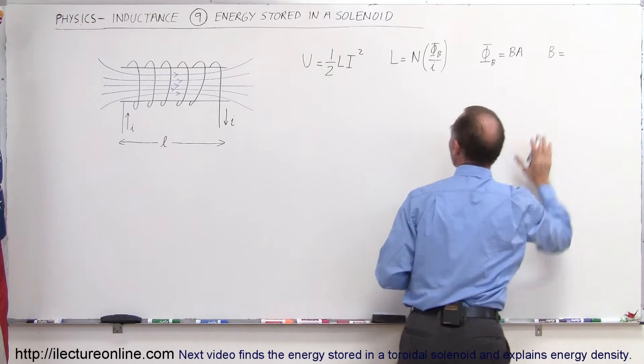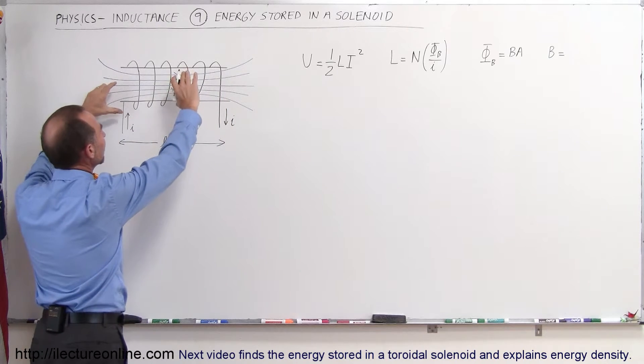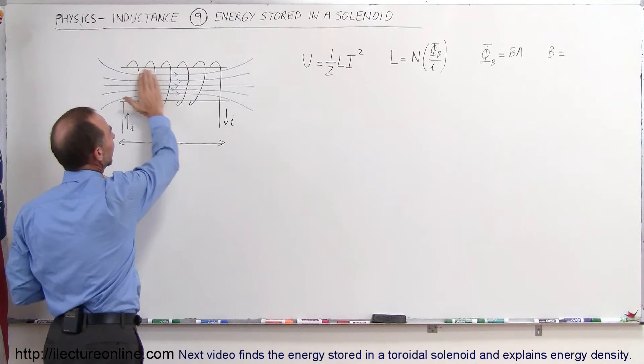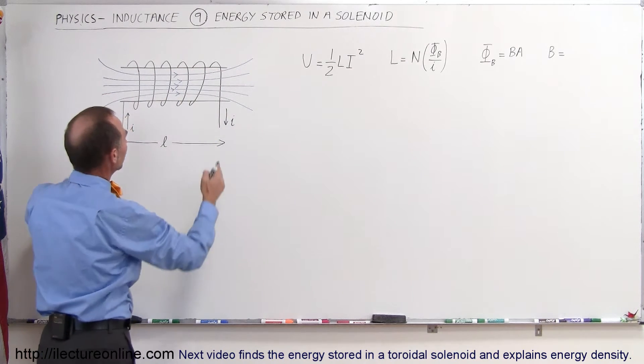We know that there's some edge effects at the end, but they can be ignored if we have a long enough solenoid with enough turns relative to the diameter of the solenoid.